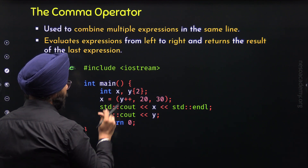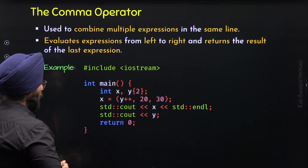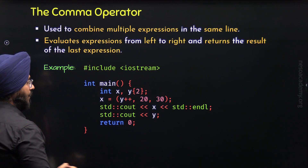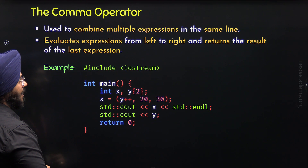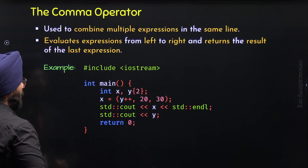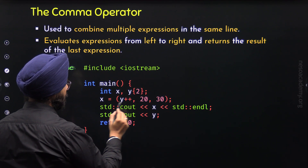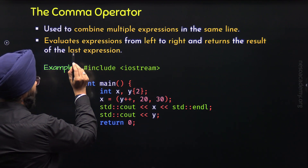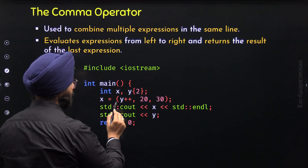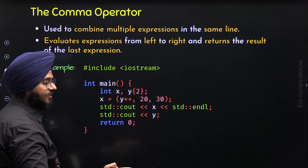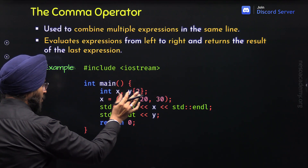Then 20 evaluates to 20, and 30 evaluates to 30. The result of the last expression is 30, and this result is returned to variable x. So all expressions are evaluated from left to right, but only the result of the last expression is returned. The result of the last expression is 30, so this entire expression evaluates to 30, and x equals 30.